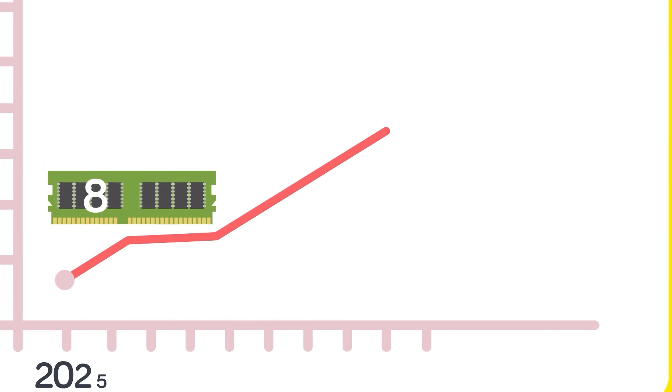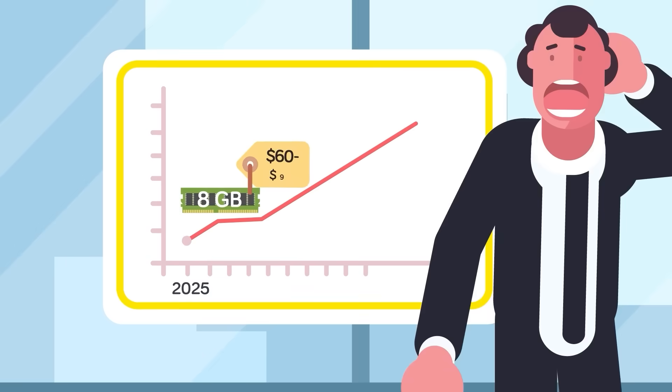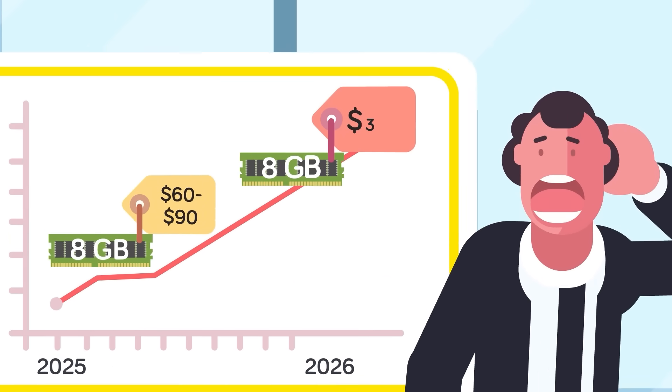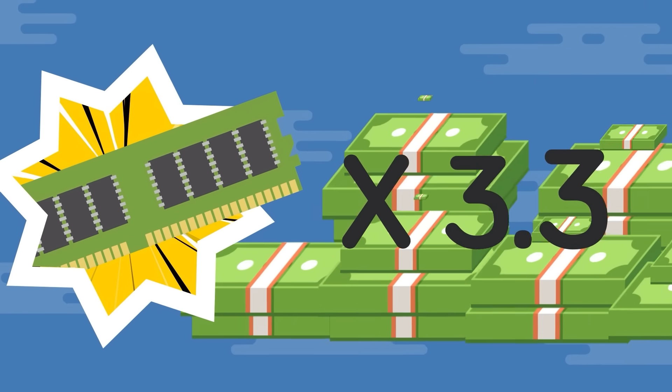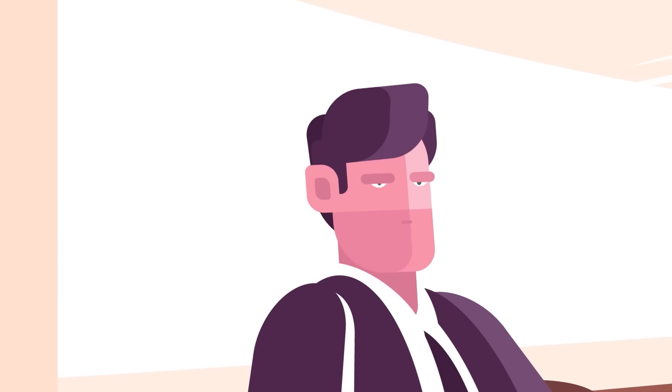Take a look at this line. In early 2025, an 8GB stick of DDR5 RAM would cost you between $60 and $90. But almost 12 months later, that same stick is going for over $300. That's basically a 3.3x jump in less than a year. So what's causing the sudden spike? It's probably not what you think.